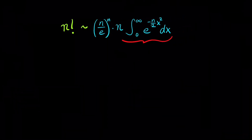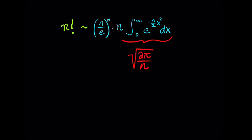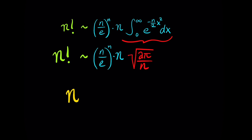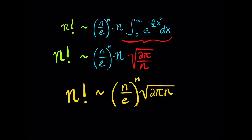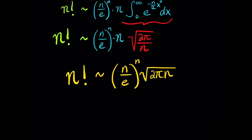With the integral equal to the square root of 2 pi over n and combining all the powers of n, we can now write Stirling's approximation: n factorial is approximately equal to (n over e) raised to the nth power, times the square root of 2 pi over n. This is Stirling's formula, and it approximates n factorial.